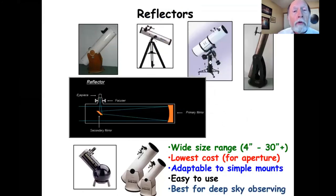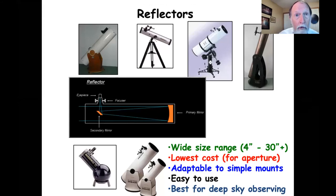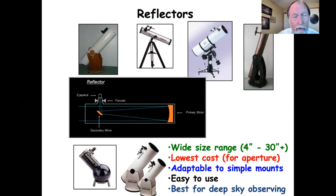Reflectors use mirrors to collect the light and focus it at the eyepiece. The light rays reflect off the primary mirror at the back of the telescope, then are reflected off a flat secondary mirror that is much smaller than the primary, and the light rays are then focused at the eyepiece. The mirrors have the advantage of being easier to grind, and the telescopes are about half the length of a comparable refractor. So reflectors are usually less expensive for their aperture than refractors. Small reflectors can be mounted on a tripod, but larger reflectors are usually mounted on an alt-az or altitude azimuth mount.